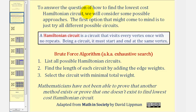To answer the question of how to find the lowest cost Hamiltonian circuit, we will consider some possible approaches. The first option that might come to mind is to just try all the different circuits, and this is the brute force algorithm, also known as the exhaustive search. Step one, we'll list all possible Hamiltonian circuits. Two, we'll find the length of each circuit by adding the edge weights. And then three, we'll select the circuit with minimal total weight.